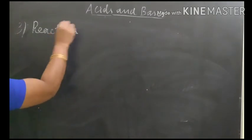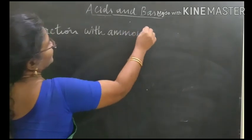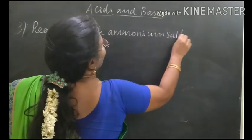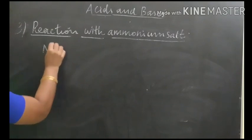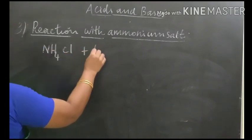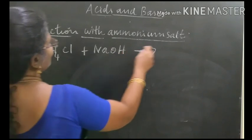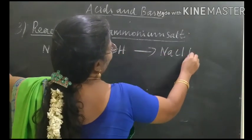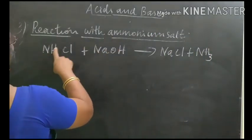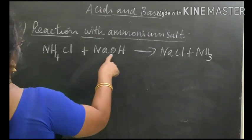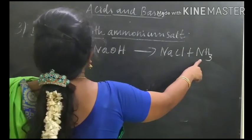Third: reaction with ammonium salts. Ammonium chloride reacts with sodium hydroxide to form sodium chloride, ammonia gas, and water.